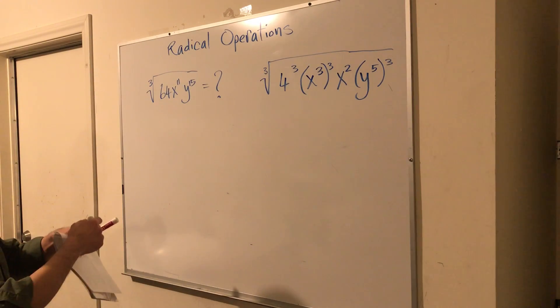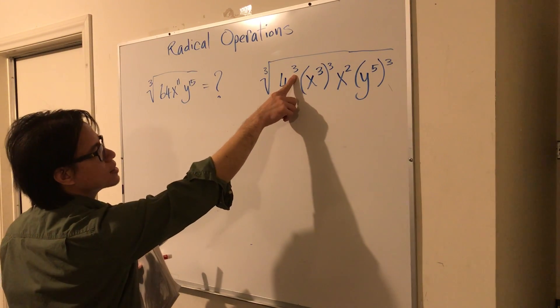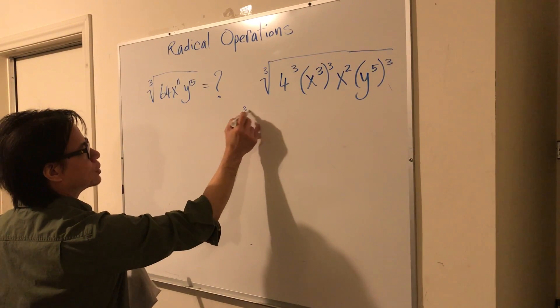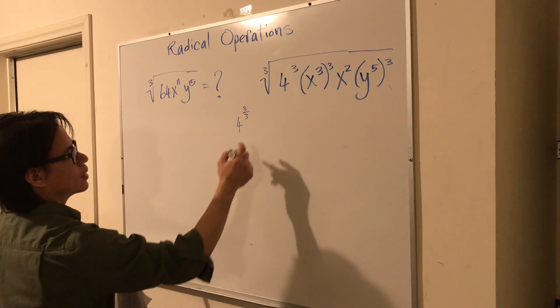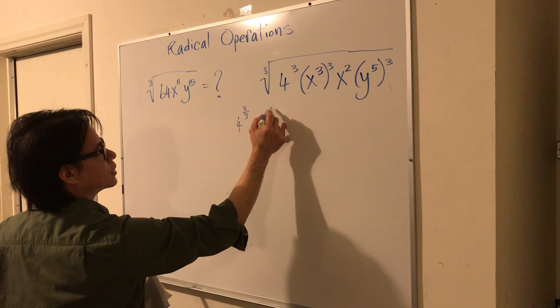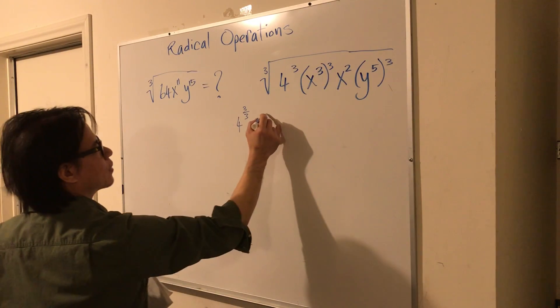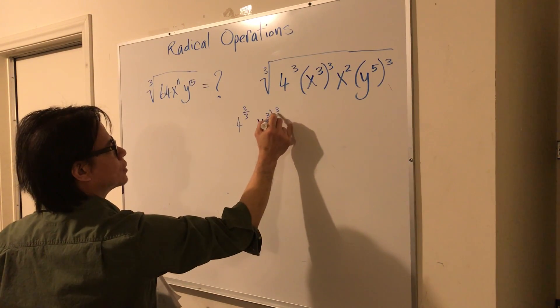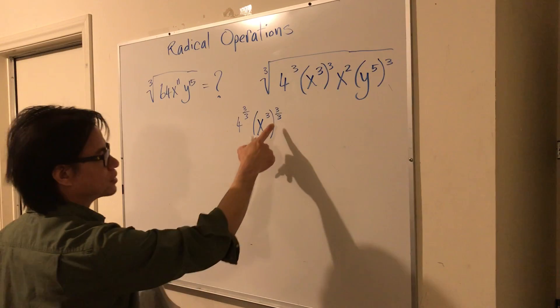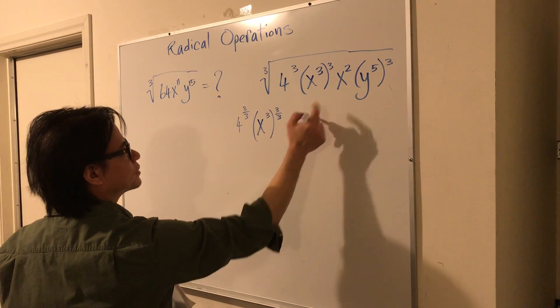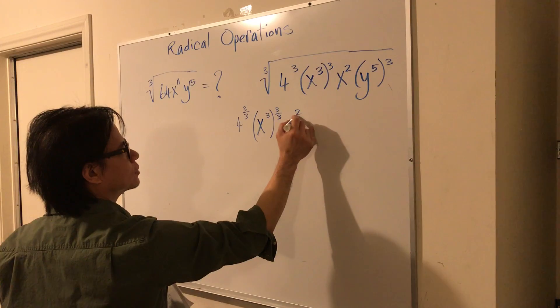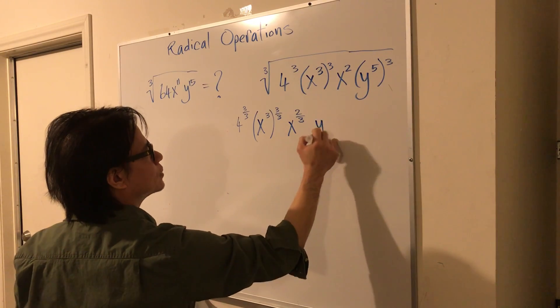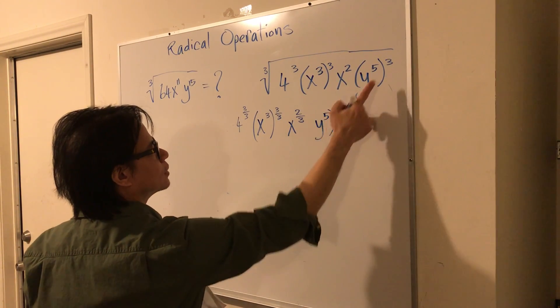Now, if you have the term that has a 3 in it, like this, remember you can think of that as 4 to the third power over 3. And then you can think of that as x to the third to the third power over 3. Tedious work here. And then here you have x to the second over 3. And then you would have y to the fifth power over 3.